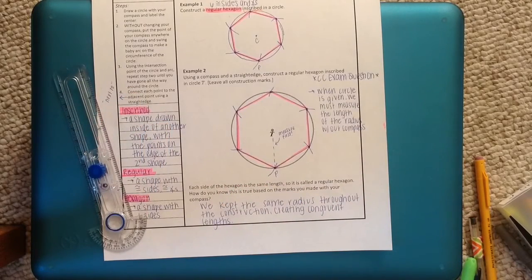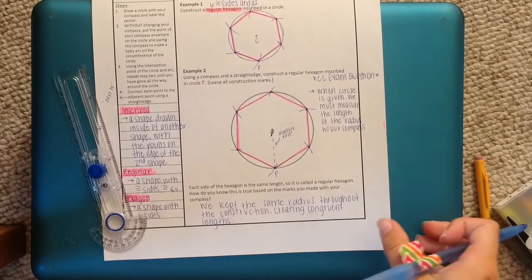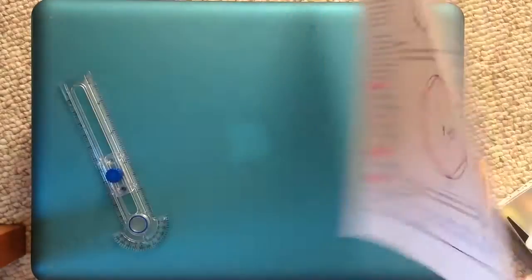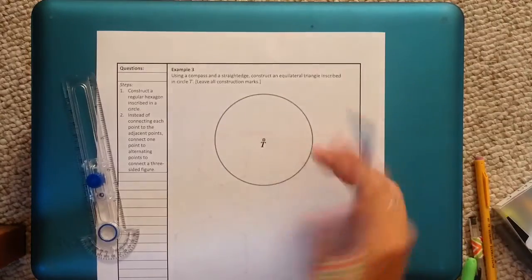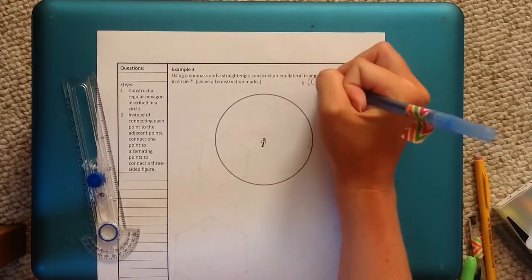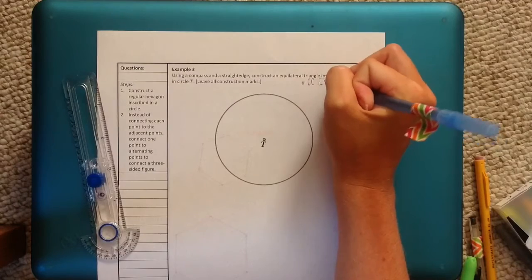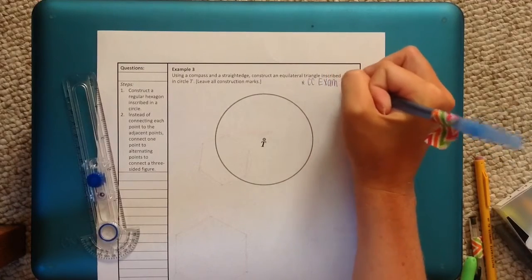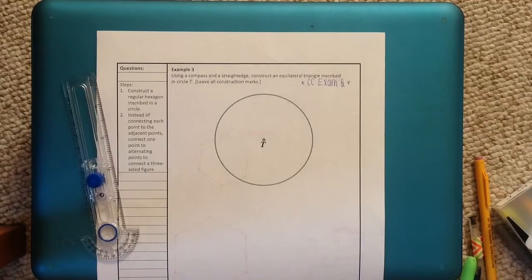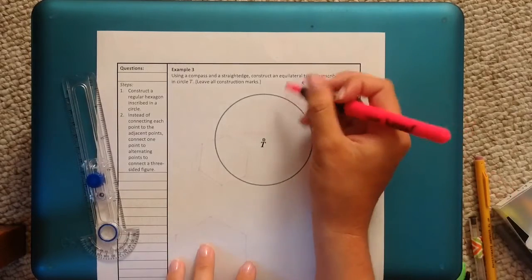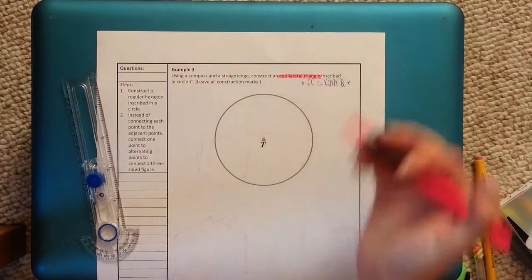Once you have that, flip it over and we will talk about example 3, our last and final example. This one, again, is a Common Core exam question. This time it says to use a compass and a straight edge to construct an equilateral triangle inscribed in circle T.